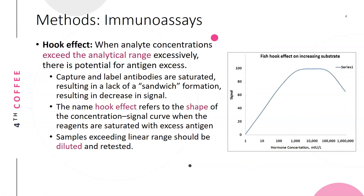The hook effect occurs when analyte concentrations excessively exceed the analytical range. In this situation there can be antigen excess — even though the assay is designed to always have enough capture and label antibodies, if there is so much antigen that the antibodies become saturated, they cannot form a sandwich, which causes a decreased signal.